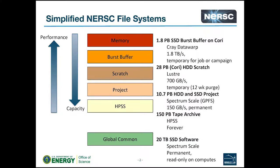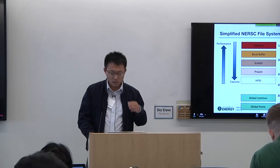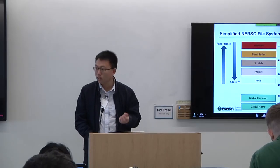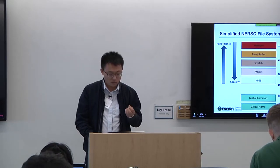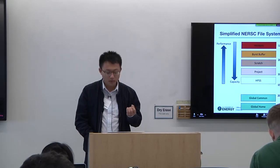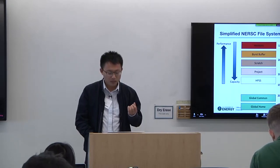For example, burst buffer is currently the fastest at NERSC. The backend hardware is SSD, and the software there is Cray DataWarp. So if you want to accelerate your IO application performance, you should try to use burst buffer as your first choice.